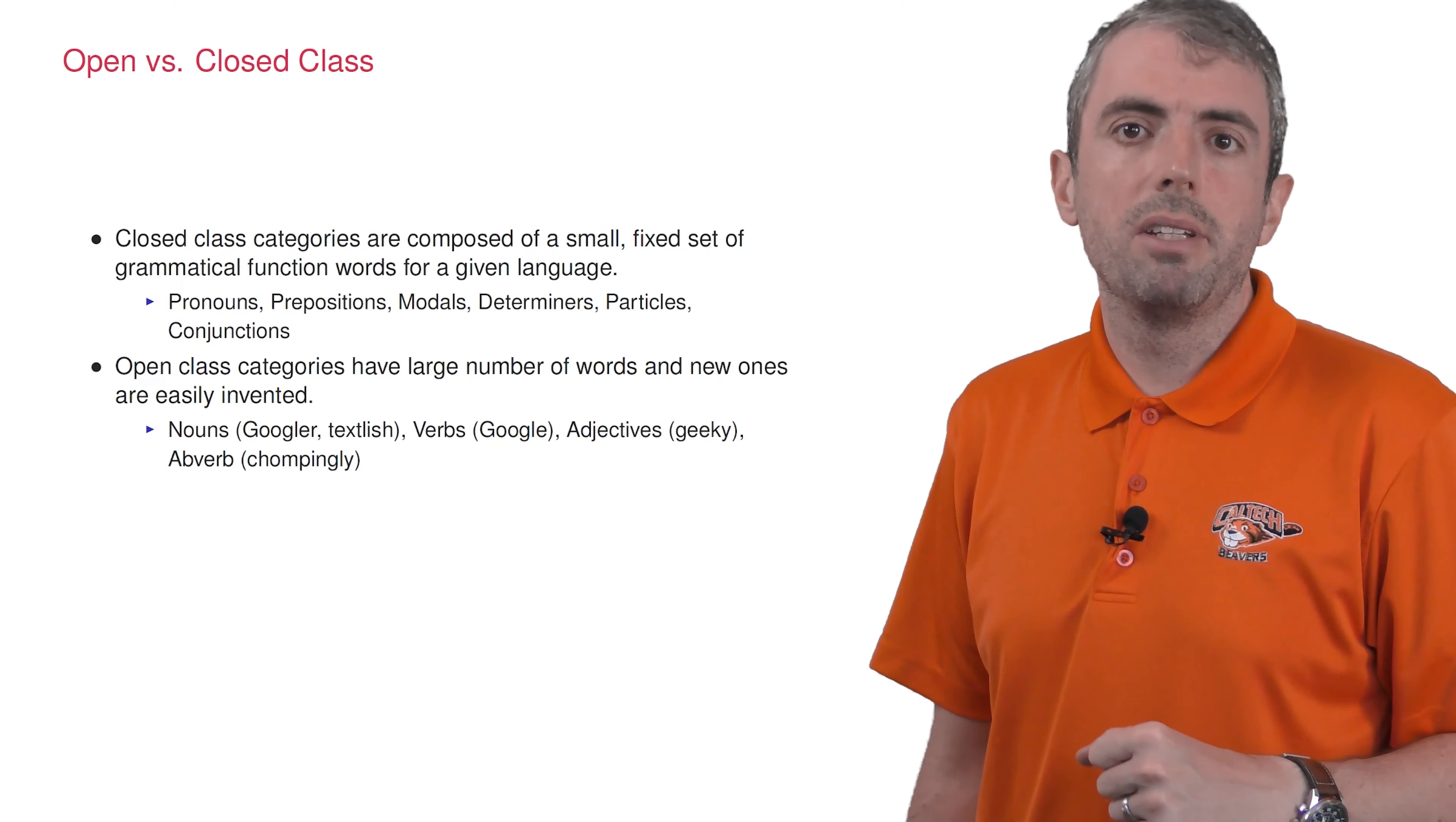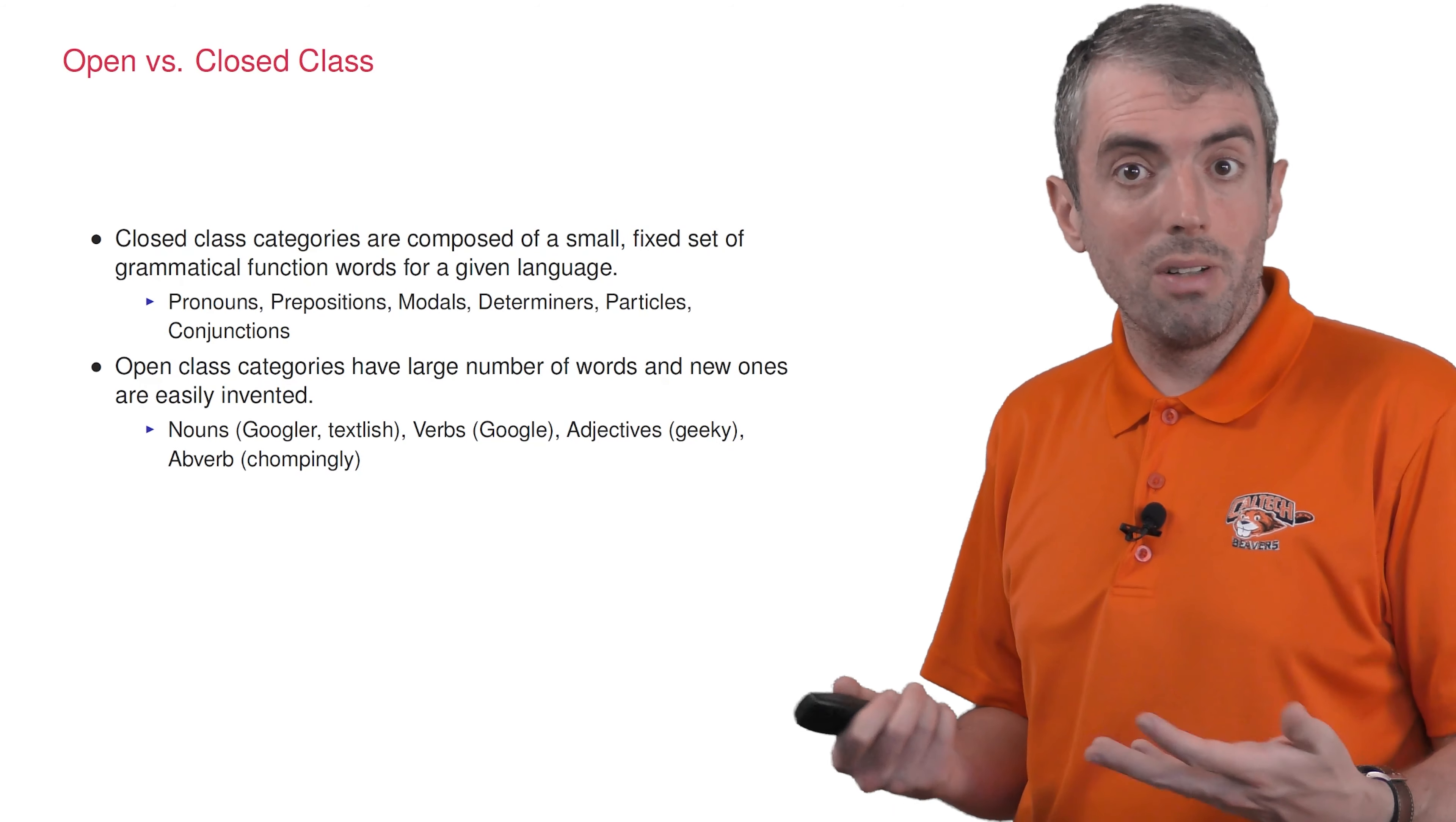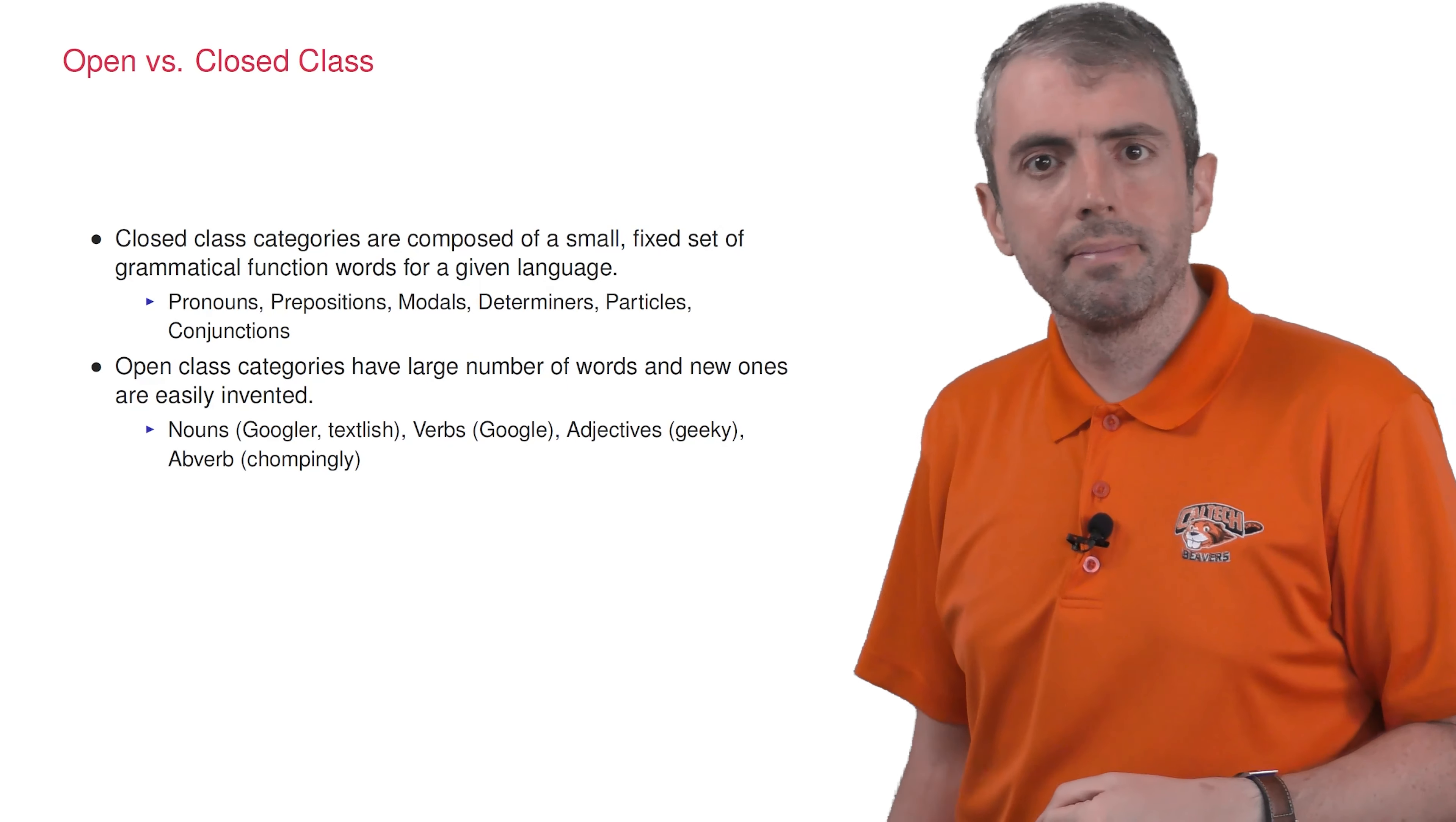The first way of dividing part of speech tags is splitting them into open and closed sets. Closed sets are more functional, things like prepositions and pronouns. You can't just go inventing a new preposition. Open classes are a little more flexible and bigger. They're responsible for conveying meaning more than function. These are your nouns and verbs. And unlike closed class parts of speech, you can invent new nouns. I can be a Googler, I can Google something, I can eat a sandwich chompingly.